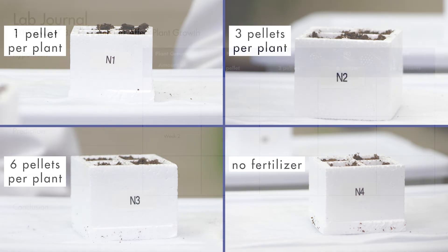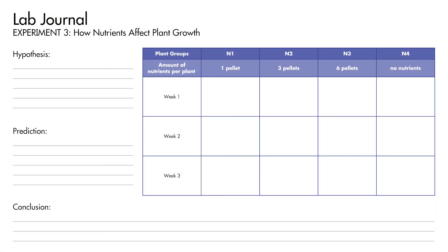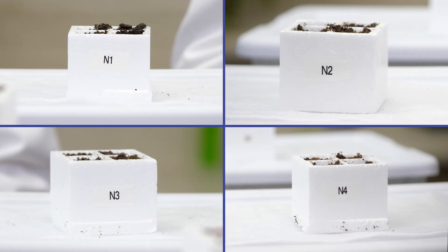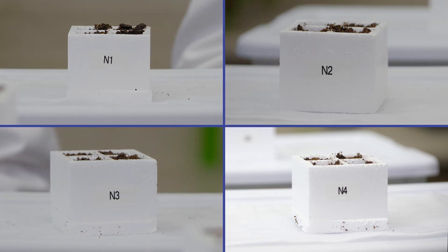Pause the video and set up your journal for this experiment. In your journal, write down the hypothesis: plant growth is proportional to the amount of nutrients a plant receives. Also write down your prediction — which group should show the most growth according to the hypothesis? We have monitored the growth of the plants for three weeks. As you watch the video, write down your observations about each plant group for each week. Since group N4 will not receive any fertilizer, it is the control.